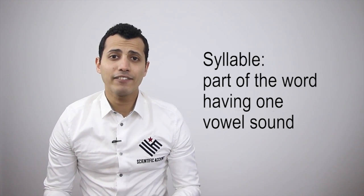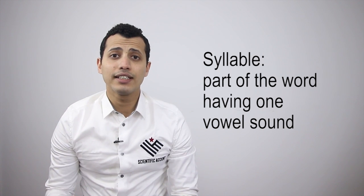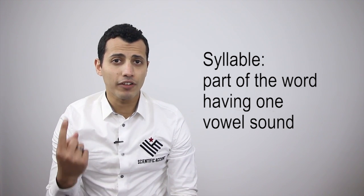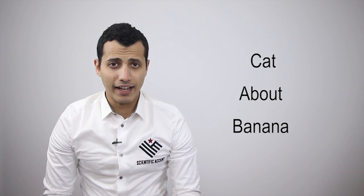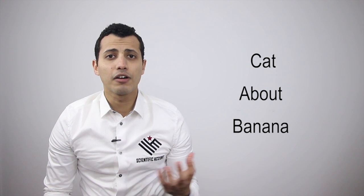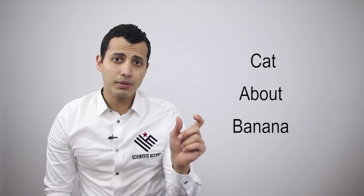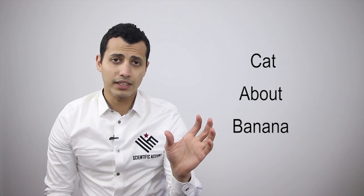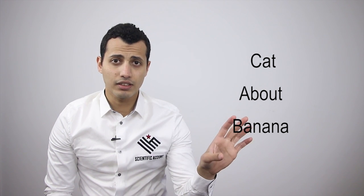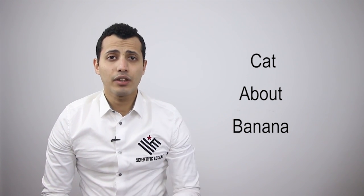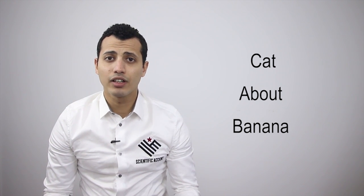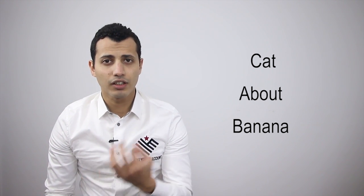Let's go back to question number one: what is a syllable? A syllable is part of the word having one vowel sound. For example, in the word 'cat,' how many syllables do I have? One. In the word 'about,' how many syllables do I have? Two. 'About' — so a vowel alone could be a syllable. 'A' is a syllable, 'bout' is a syllable. In the word 'banana,' how many syllables do I have? Three: ba-na-na.